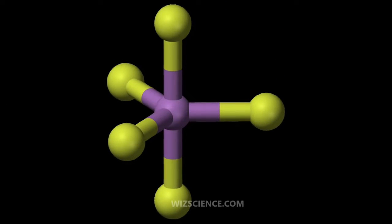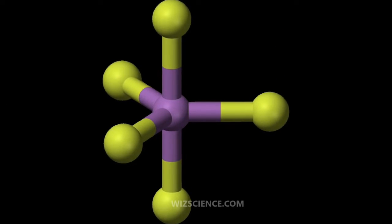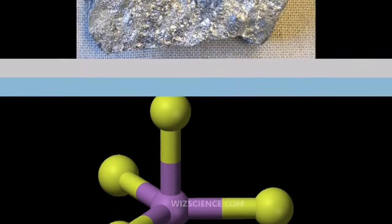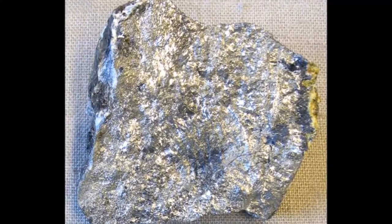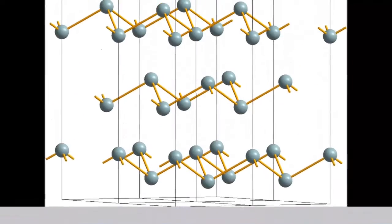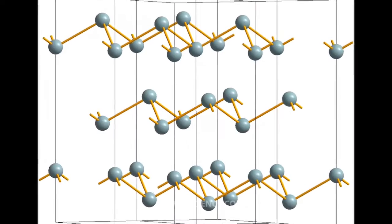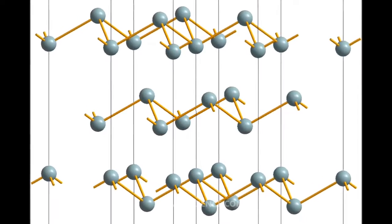For some time, China has been the largest producer of antimony and its compounds, with most production coming from the Xikuangshan mine in Hunan. The industrial methods to produce antimony are roasting and subsequent carbothermal reduction, or direct reduction of stibnite with iron.